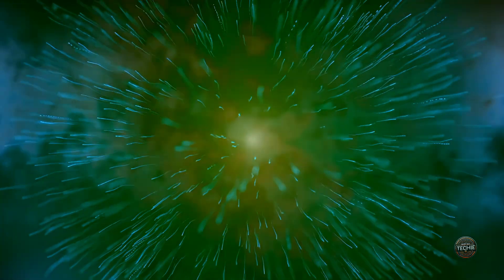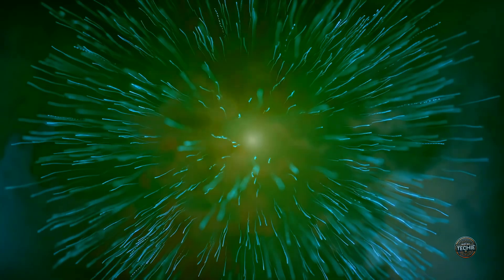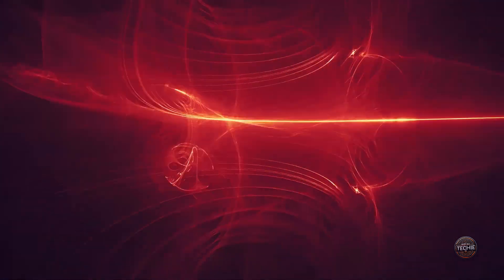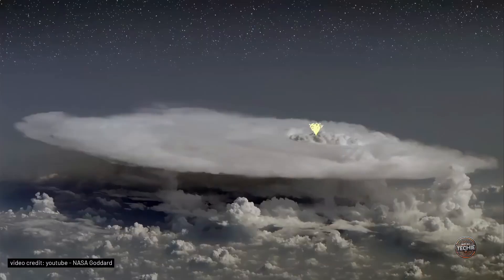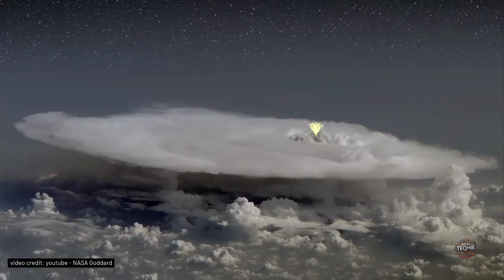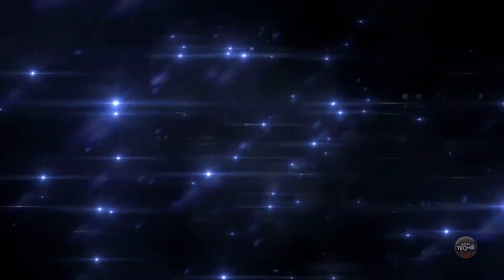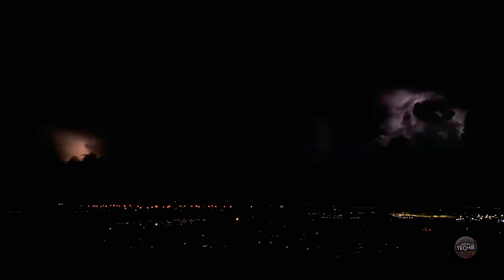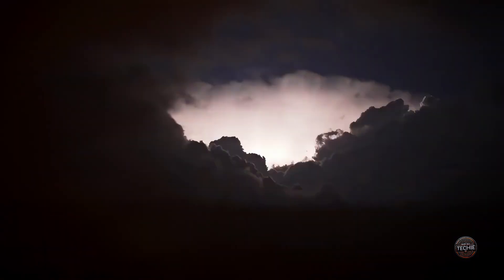In contrast, terrestrial gamma-ray flashes are brief, but extraordinarily powerful. Lasting only a few millionths of a second, these flashes release immense amounts of energy. Despite their fleeting nature, TGFs are considered some of the most energetic events occurring on Earth. Then there are flickering gamma-ray flashes, a phenomenon that has intrigued scientists. These rapid pulses of gamma rays, each lasting just a few milliseconds, often occur immediately before a lightning strike. Some researchers believe that flickering flashes might play a role in triggering lightning, solving one of meteorology's most enduring mysteries.